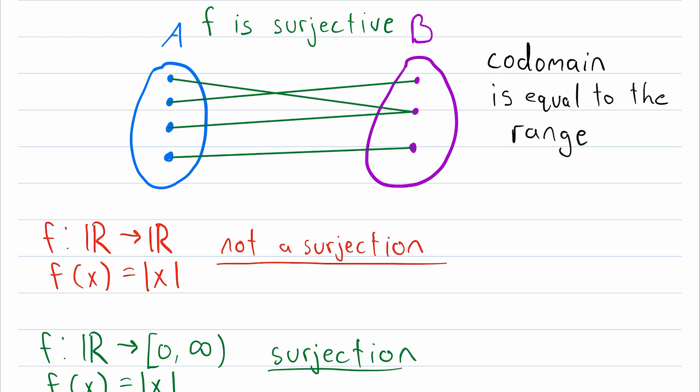Because it maps to every element of the codomain. If a function doesn't cover the entire codomain, so there's some element that doesn't get mapped to, then it's not a surjection. So this not a surjection, but this is a surjection.